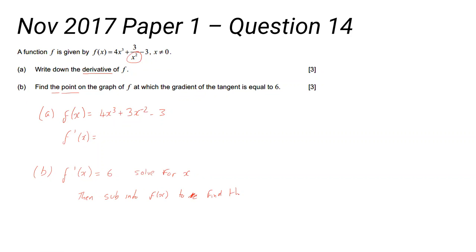Okay, so a couple of things there that you might miss—well, three things actually. First of all, put the gradient function equal to six. Second, solve for x to find the value of x. But it says the point, it doesn't say the points, so you're only going to have one value of x.